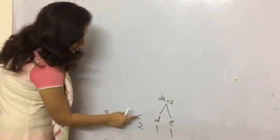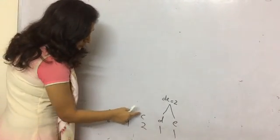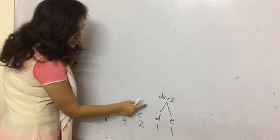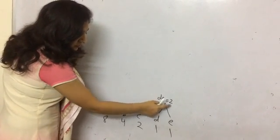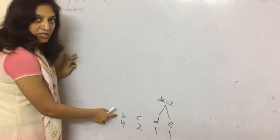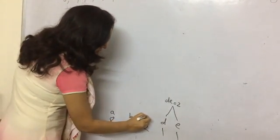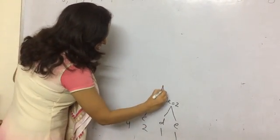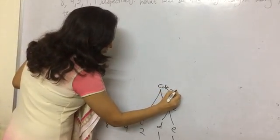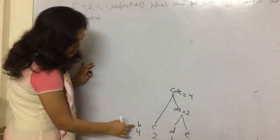Now C can be joined with D,E or C can be joined with B. If we join C with D,E it will give us 4. And if we join C with B it will give us 6. So we will join C with D,E because 4 is less than 6. So C, D, E will give us 4. Same way we will continue.